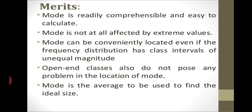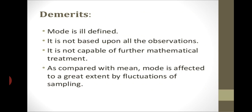Merits: Mode is readily comprehensible and easy to calculate. Mode is not affected by extreme values. Mode can be conveniently located even if the frequency distribution has class intervals of unequal magnitude, and open-end classes do not pose any problem. Mode is the average used to find the ideal size. Demerits: Mode is not well-defined in all cases, it is not based on all observations, it is not capable of further mathematical treatment, and compared with the mean, mode is affected to a great extent by fluctuations of sampling.